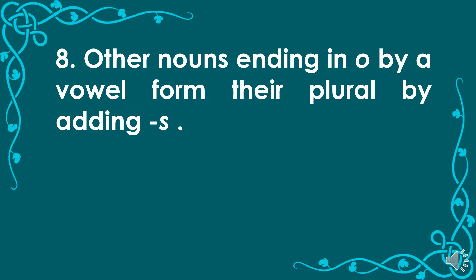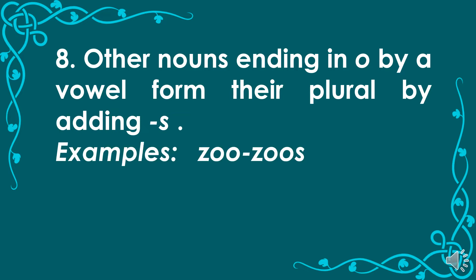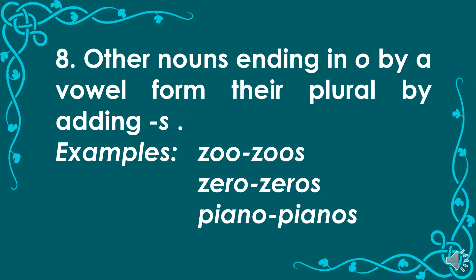Number 8: Other nouns ending in O preceded by a vowel form their plural by adding S. Examples: zoo, zoos. Zero, zeroes. Piano, pianos.